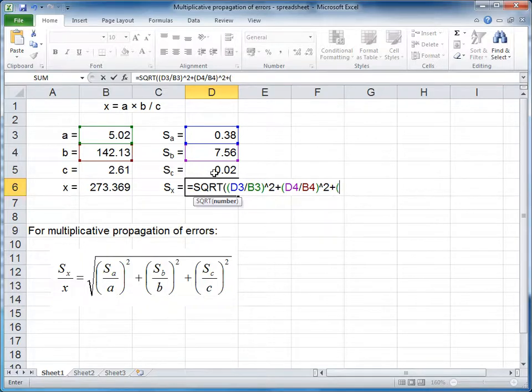Plus the error of C, divided by the magnitude of C, and square, close brackets.